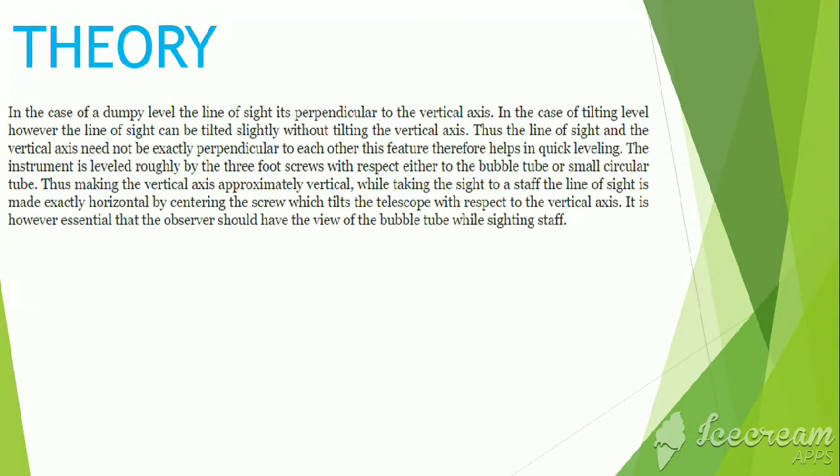Theory. In the case of dumpy level, the line of sight is perpendicular to the vertical axis. In the case of tilting level, however, the line of sight can be tilted slightly without tilting the vertical axis. Thus, the line of sight and the vertical axis need not be exactly perpendicular to each other. This feature therefore helps in quick leveling.